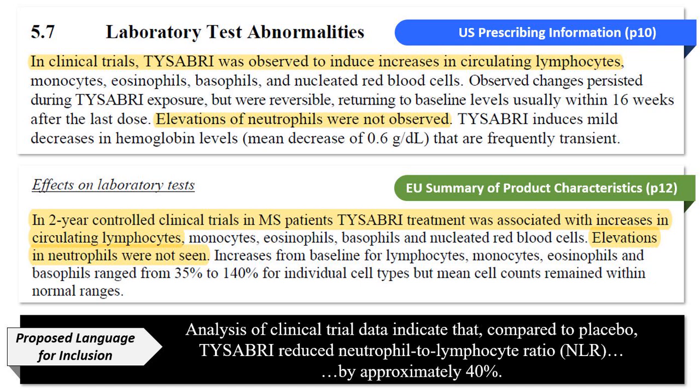Chapter 2 gives you data to that effect — more graphs, p-values, and such. Chapter 3 is more of an unpacking of NLR outside of multiple sclerosis and Tysabri, to give you a sense of what that means as a marker. And what you're looking at now is a potential label update — we're going to change how this drug is used in clinical practice.